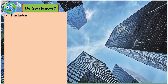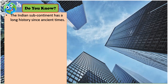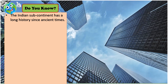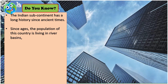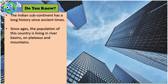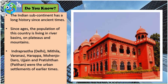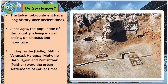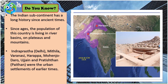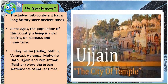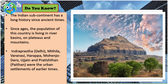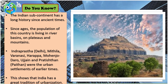The Indian subcontinent has a long history of urbanization since ancient times. The population of this country has been living in river basins, on plateaus, and in mountains for ages. Settlements like Indraprastha, Delhi, Mithila, Varanasi, Harappa, Mohenjo-daro, Ujjain, and Pratishthan were urban settlements of earlier times. This shows that India has a great tradition of urbanization.